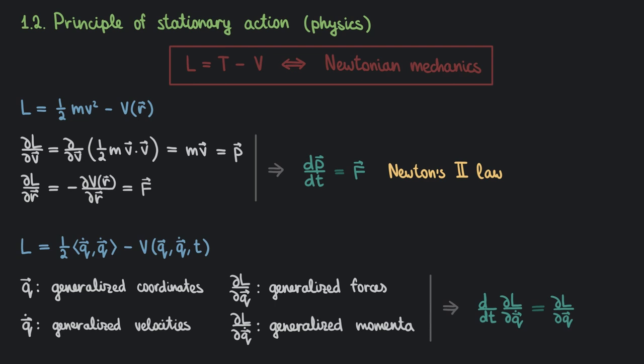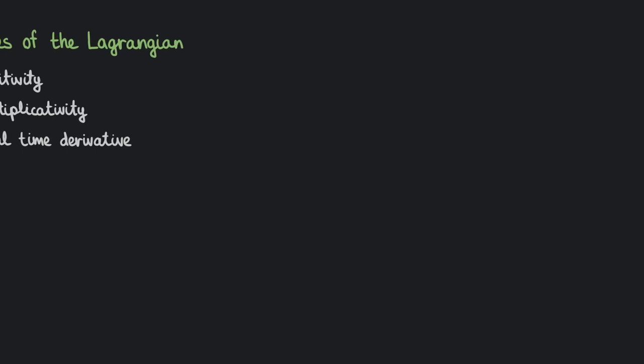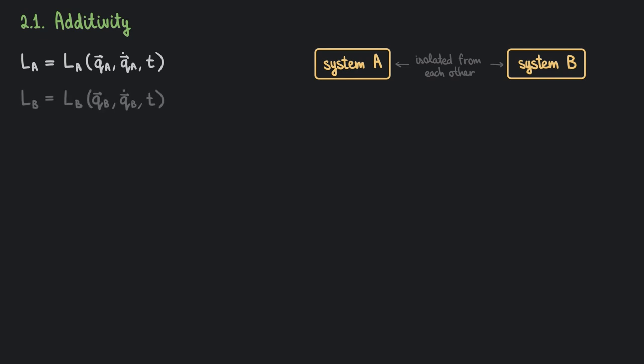But why does the Lagrangian of classical mechanics have the form it has? To answer this question, we would first need to talk about general properties of Lagrangians. Let's consider two systems A and B, and let's say these systems do not influence each other. Mathematically, this means that the Lagrangian of system A doesn't depend on the quantities of system B, and the Lagrangian of system B doesn't depend on the quantities of system A. Physically, we can say that systems A and B do not interact — for example, they are at a large distance from each other.